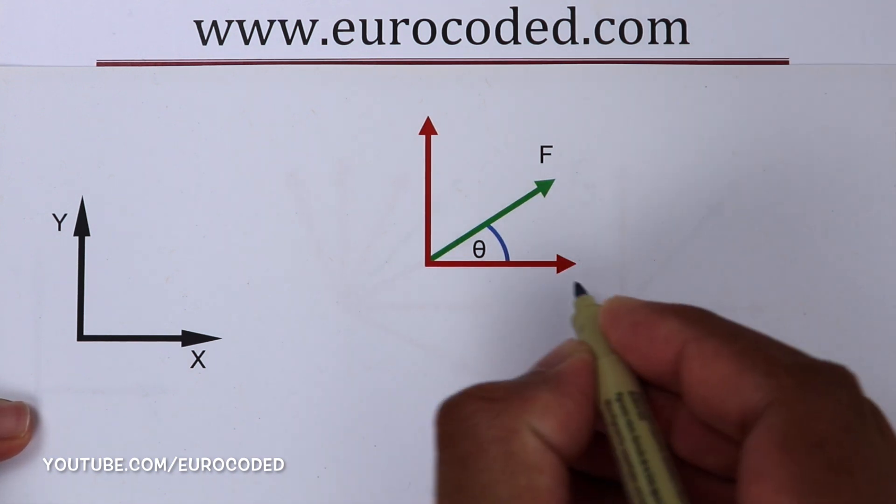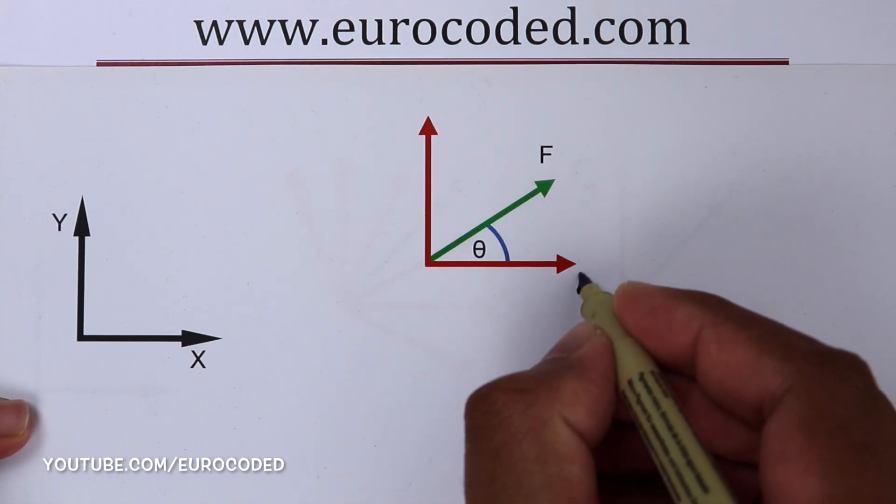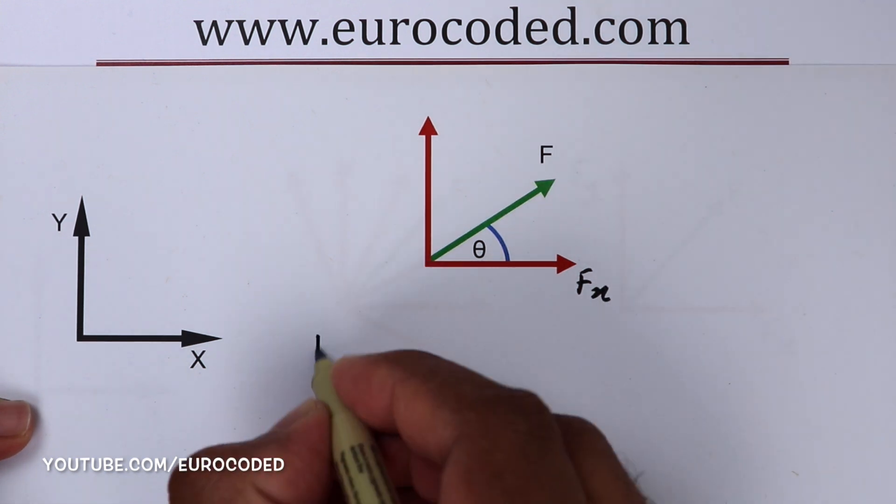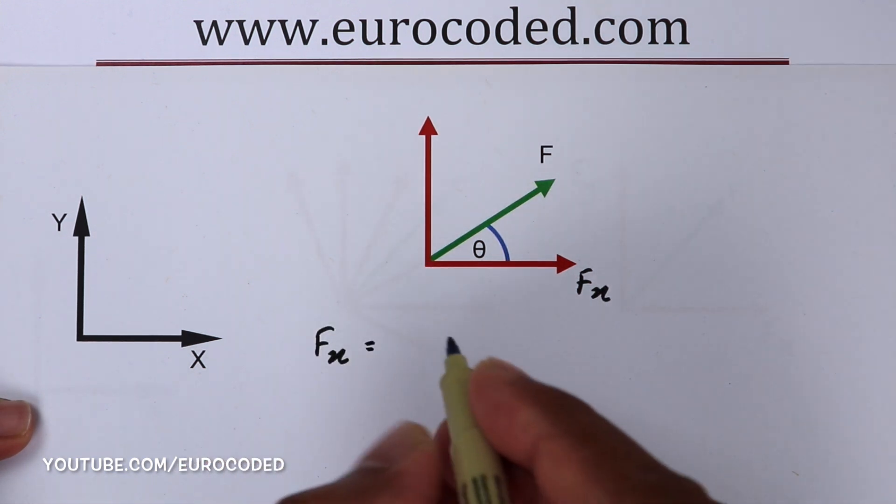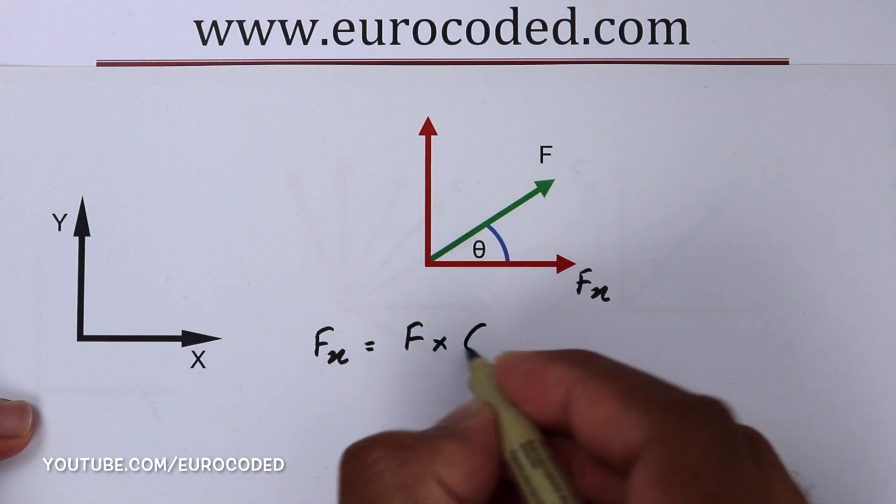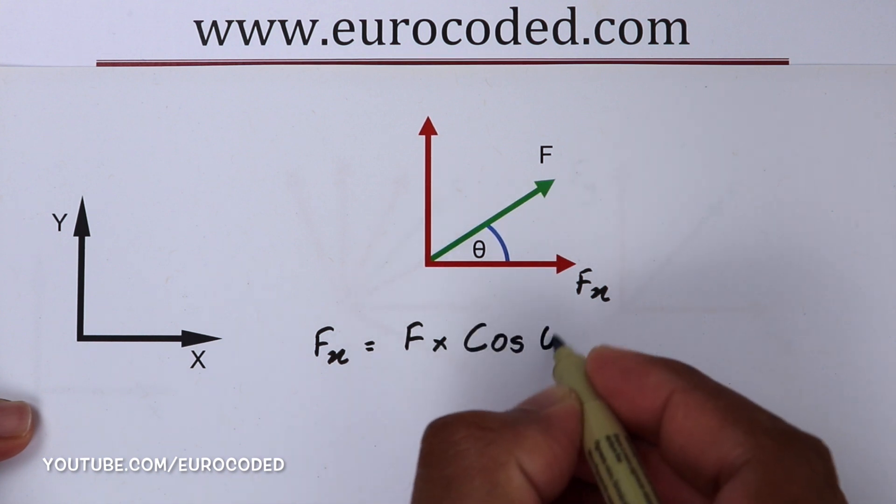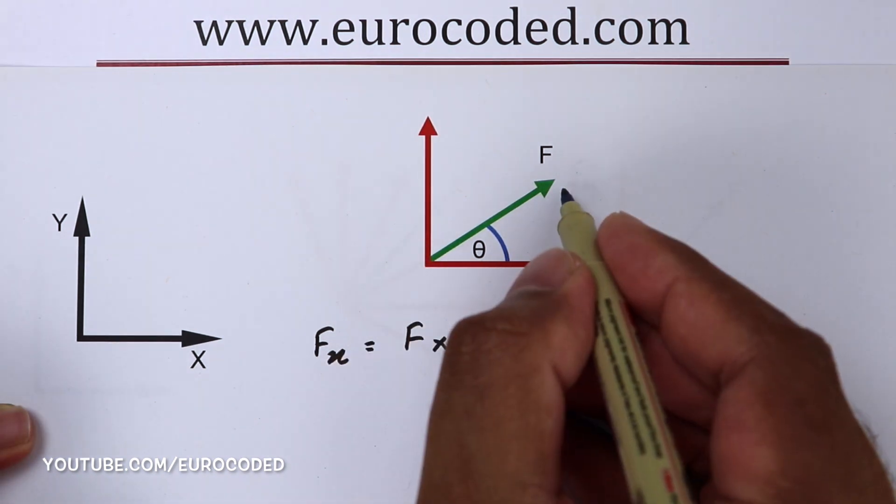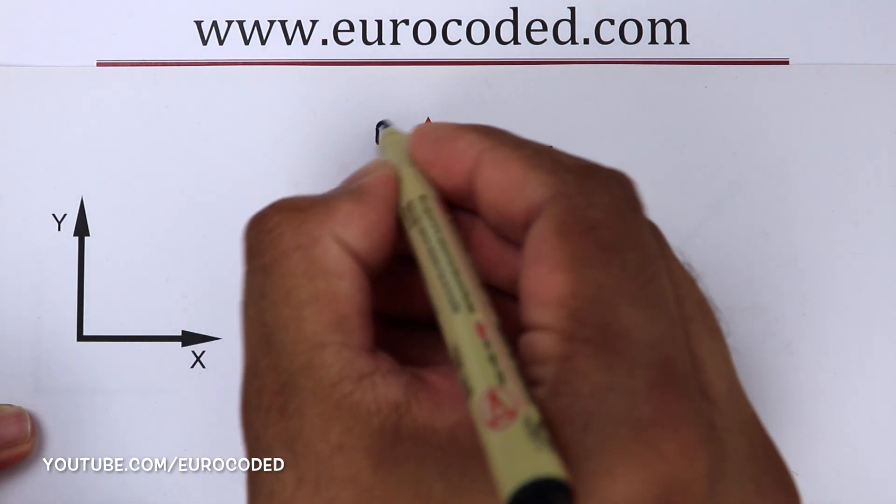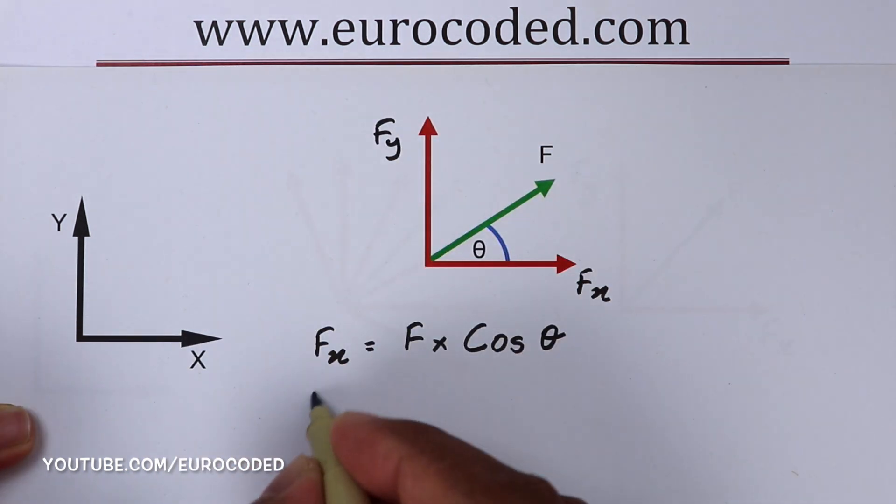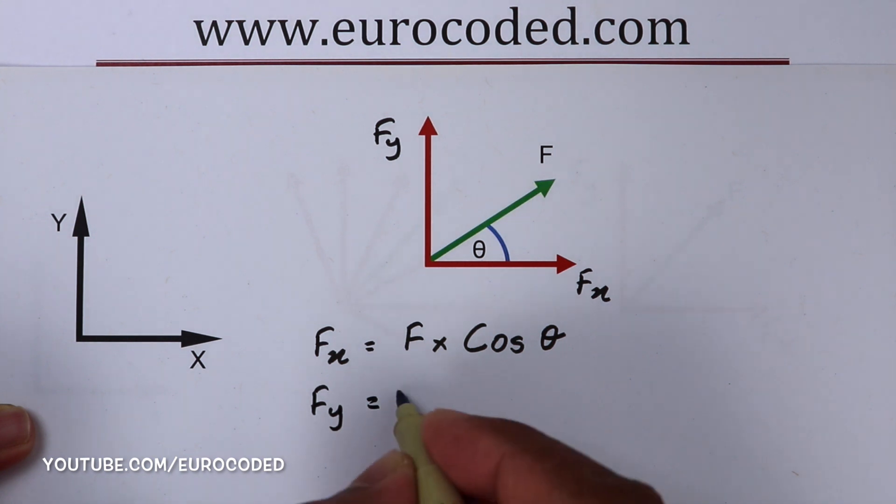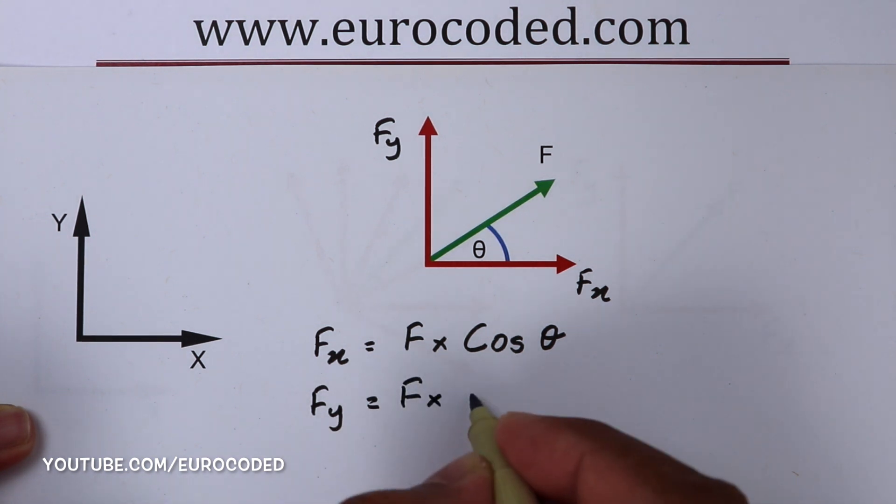Now we can write our horizontal component Fx. Fx is equal to F times cos theta. And the vertical component of this force, Fy, is equal to F times sin theta.